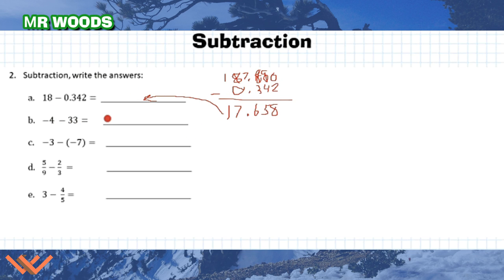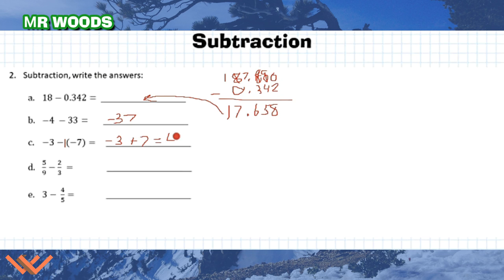Subtracting negative 4 minus 33: I add them because they both have a negative symbol in front, so I know it's going to be negative. 33 plus 4 is 37, so the answer is negative 37. Now for minus 3 minus negative 7: when you have a minus sign in front of a negative, we can say it's minus 1 times negative 7. A negative times a negative is a positive, so that becomes minus 3 plus 7, which equals 4.